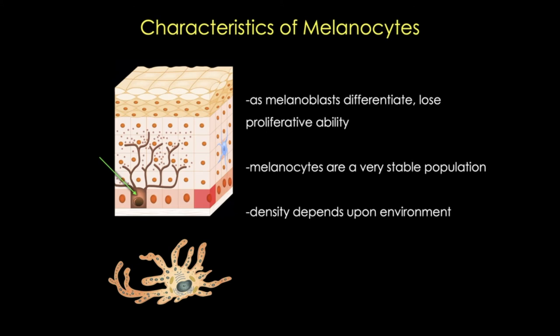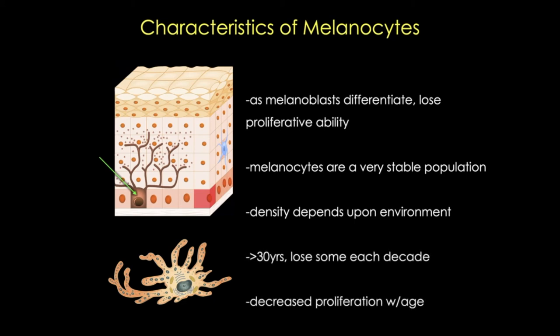Like most cell populations, with aging we see some decline in melanocyte populations—we lose melanocytes every decade. At the same time, we see a decreased ability of those progenitors to proliferate with age. All of this results in skin changes, including pigment changes with age.